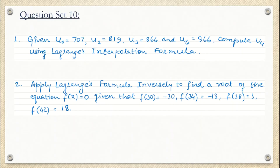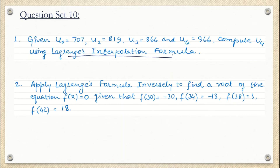Here are the questions which we have to solve. The very first question is: given u-naught = 707, u2 = 819, u3 = 866, and u6 = 966, compute u4 using Lagrange's interpolation formula. They have given you to use Lagrange's interpolation formula and find the answer of u4. Now, u-naught means: at x equals 0, y is 707.